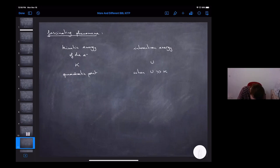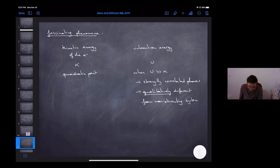What happens is that when U is much greater than K, when the interactions dominate, one can get strongly correlated phases. Strong strongly interacting limit. And these are qualitatively different from a non-interacting system.